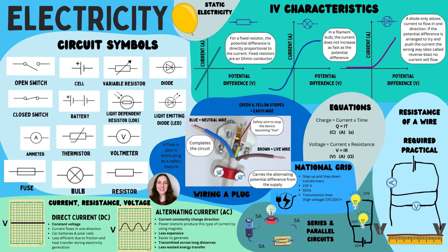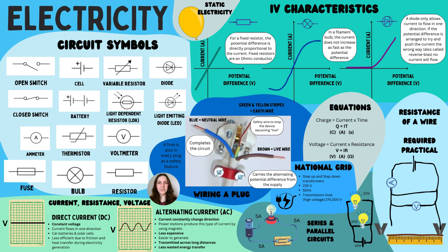Electricity is a definite marmite topic — you either love it or love it! Three definitions you need to know include current, voltage, and resistance. Current is the flow of charge — specifically the delocalized electrons found within the metal wire that conducts electricity. Resistance is the opposition to this flow of charge and is measured in ohms. Voltage, or potential difference, is the push given to those electrons throughout the circuit. These relate in the equation V = IR. Another equation is charge equals current times time.